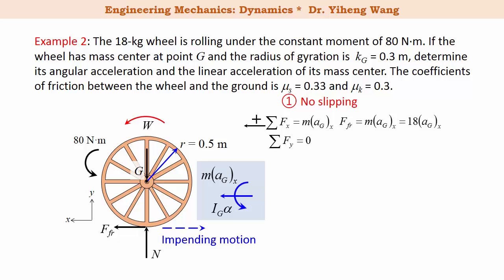Resultant force along the y direction equals to zero. From here we can solve for the normal force, which is the same in magnitude as the weight force, which is 177 newton. For the resultant moment, recognize that when there is no slipping, the point of contact is indeed the instantaneous center of zero velocity. The forces W, N, and the frictional force all pass through this point. Therefore, it is most convenient to summarize the resultant moment about this instantaneous center of zero velocity, and that equals to IIC alpha.